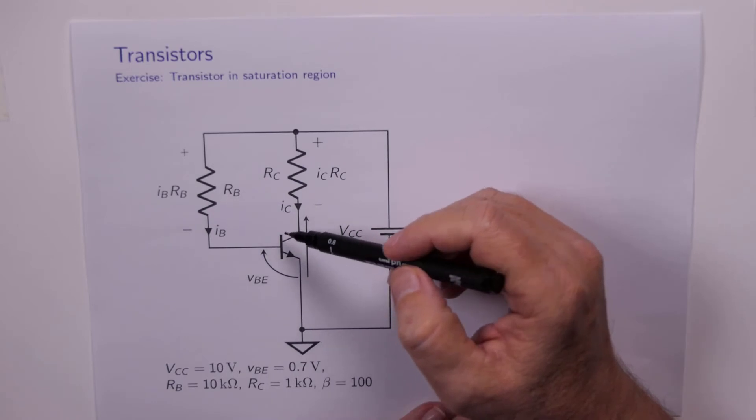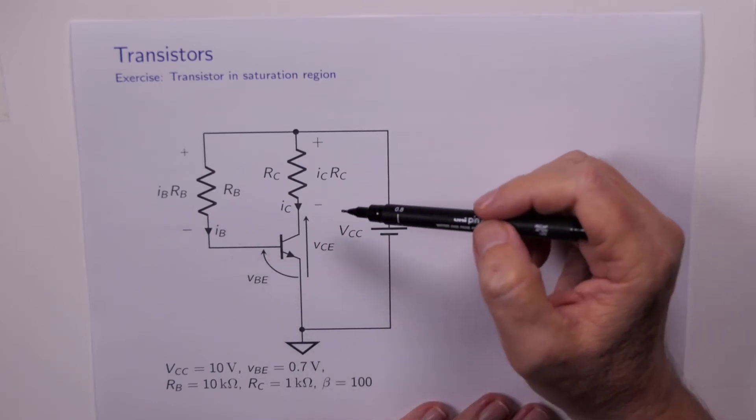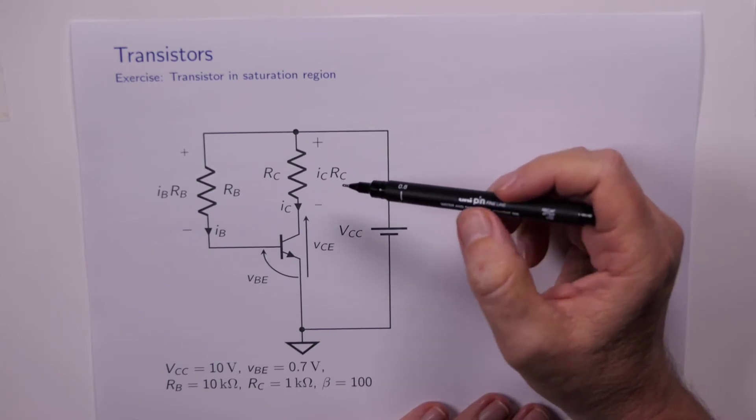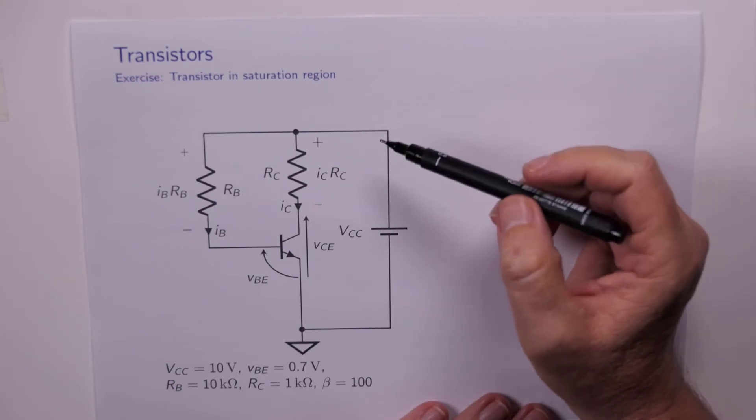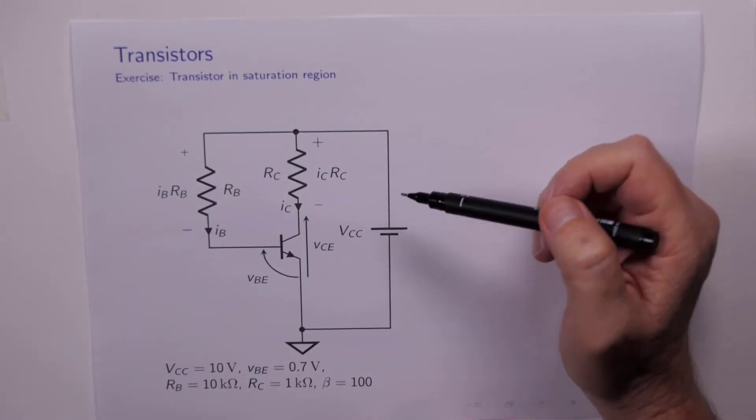Now the voltage there is 10 volts. So this would be 10 volts. But if that's 10 volts and that's 0 volts, clearly that's enough to turn the base emitter junction on. So we can rule out being in the cutoff region. But we can't really figure out whether it's active or saturated,